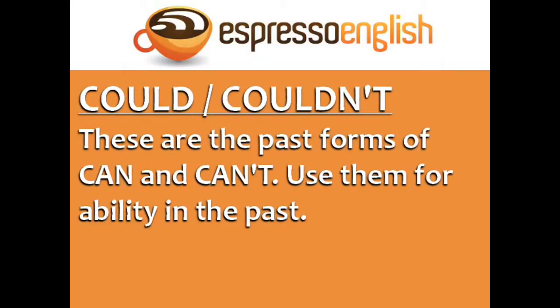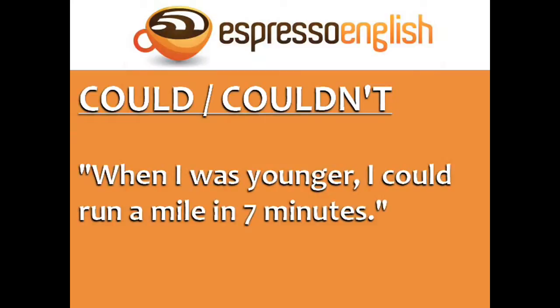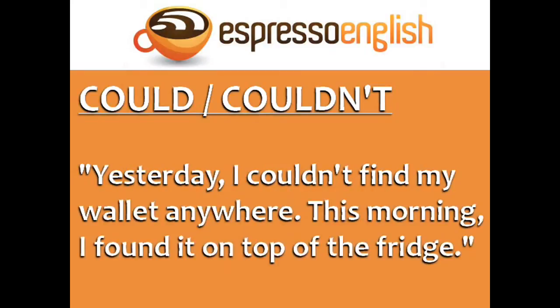Could and couldn't are the past forms of can and can't. Use them for ability in the past. For example, when I was younger, I could run a mile in seven minutes. Yesterday, I couldn't find my wallet anywhere. This morning, I found it on top of the fridge.